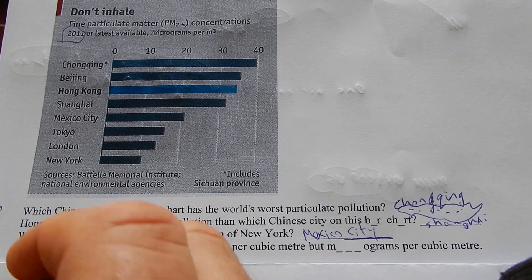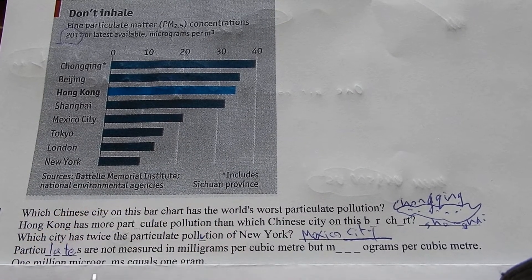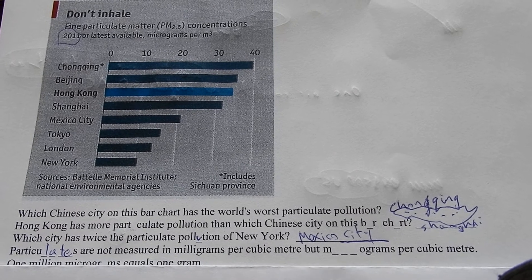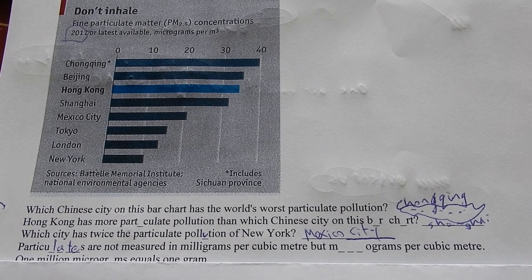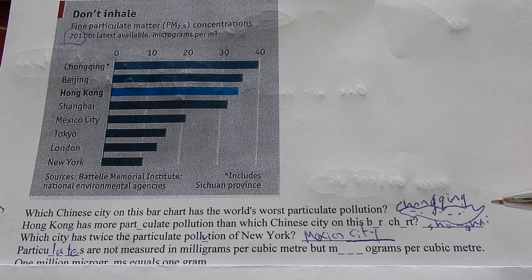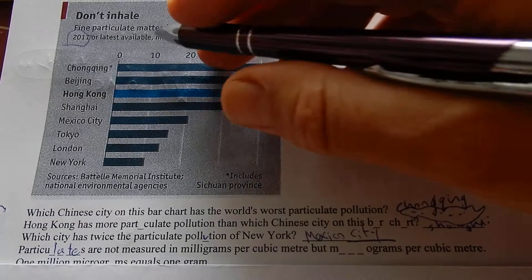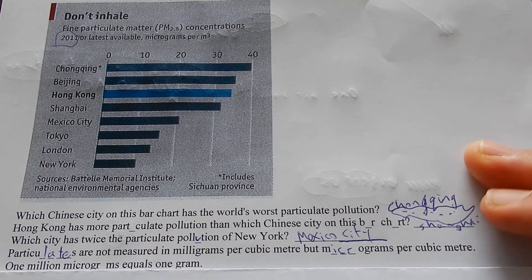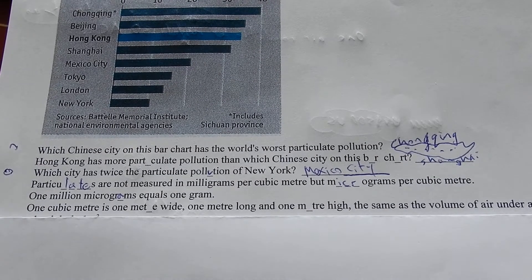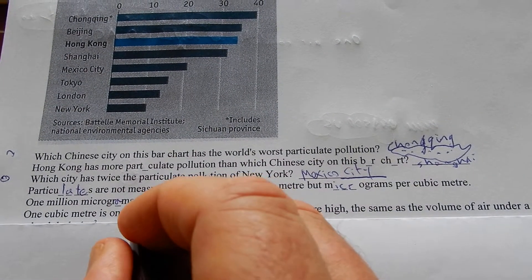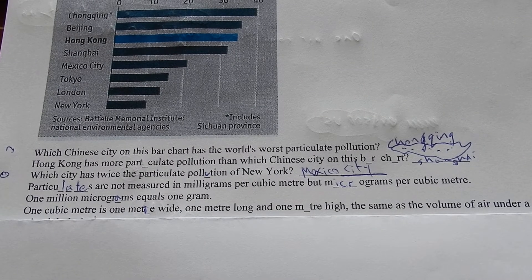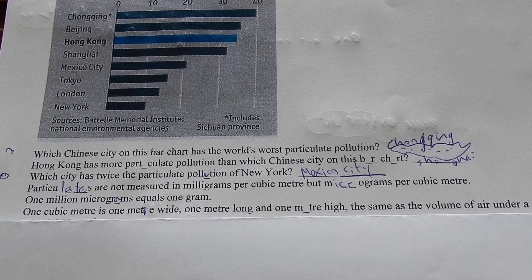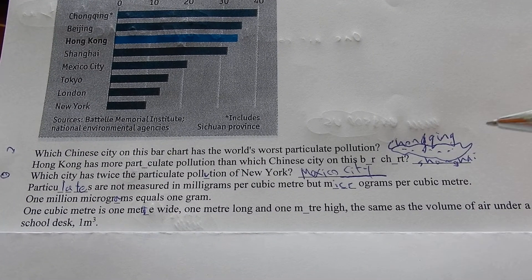Particulates are not measured in milligrams per cubic meter but micrograms per cubic meter. One million micrograms equals one gram. One cubic meter is one meter wide, one meter long, one meter high — the same volume as the air under a school desk.